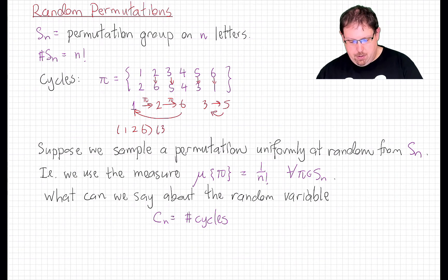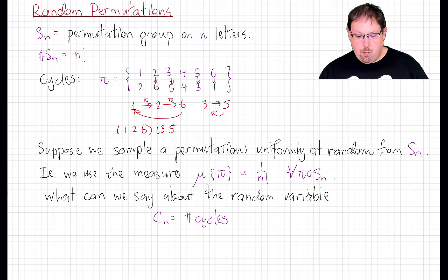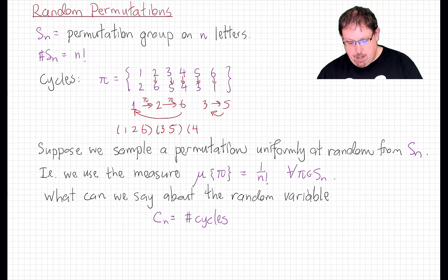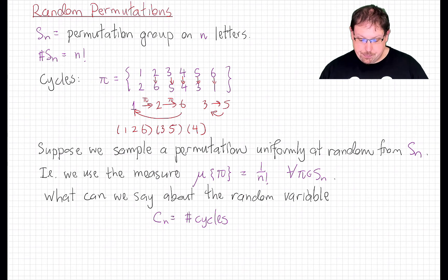3 gets mapped to 5, and 5 goes back to 3. So we have another cycle. And there's only one number left out here, 4, which is a fixed point of this permutation. I think in most combinatorics literature we would simply not write it, but for us we're going to write it as a cycle of length 1.